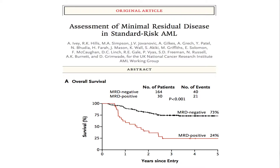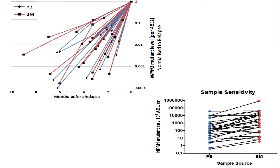AML is gaining steam with MRD, which is often not seen in this disease process. This was shown in the NPM1 RQ-PCR assay, demonstrating a significant difference in survival between MRD-negative and MRD-positive patients. Bone marrow testing is better than peripheral blood, and the level of NPM1 essentially helped decide when people relapse.